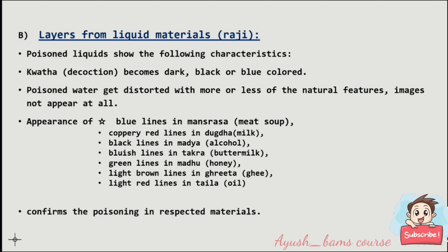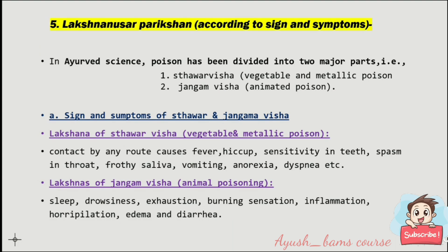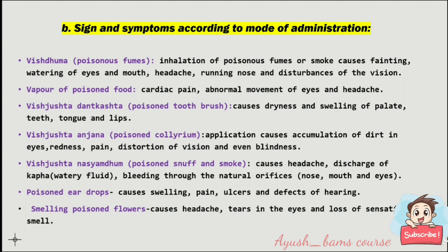Lakshanusar parikshan — signs and symptoms: in Ayurveda, poisons are divided into two major parts — sthavara visha and jangam visha. Lakshanas of sthavara visha include: contact by any route causes fever, hiccup, sensitivity in teeth, spasm in throat, frothy saliva, and vomiting. Lakshanas of jangam visha include: sleepiness, drowsiness, exhaustion, and burning sensation.